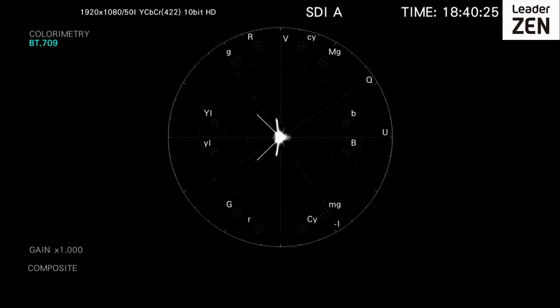In digital applications, a vectorscope instead plots the CB and CR channels against each other. These are the two channels in digital formats which contain chroma information.